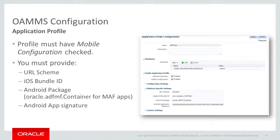The third one is called Android package. This field refers to the fully qualified name of an activity in the Android application. In a MAF application, you don't write Android activity classes yourself — they are provided by the framework. Thus, the value for that field should be oracle.adfmf.container in all cases. Finally, there's the signature for the Android app. This one is a bit trickier.